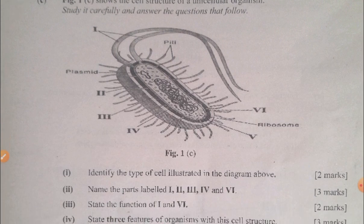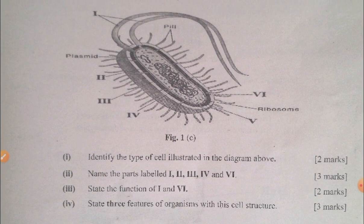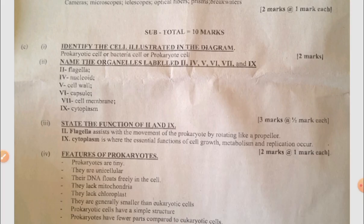Moving on to question 1c, we have a diagram where you're supposed to identify the type of cell, name the parts labeled i to v, state the function of all the parts, and state three features of the organism. The answer is that it is a bacterial cell or prokaryotic cell, with the functions of each part and the features of a prokaryotic cell.